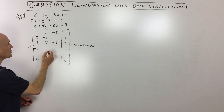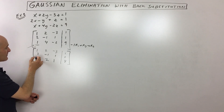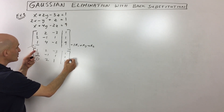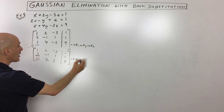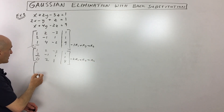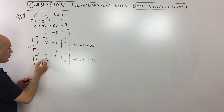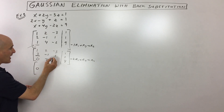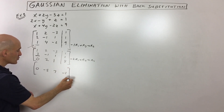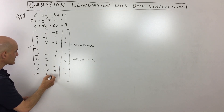The other two rows stay the same, so I'm just copying those down. Now the next step is to get zero in this next position. I'm going to multiply negative two times row one, add that to row two, and put the answer in row two. Negative two times one is negative two, plus two is zero. Negative four plus negative one is negative five. Six plus one is seven and negative two plus one is negative one. You have to be careful with the arithmetic because a little mistake will throw the whole system off.